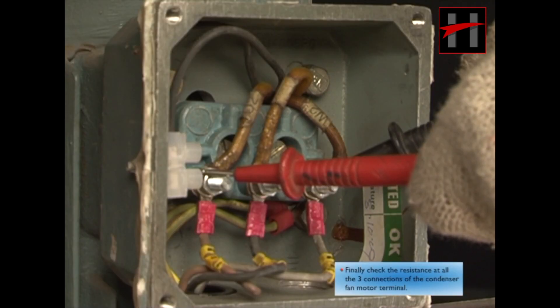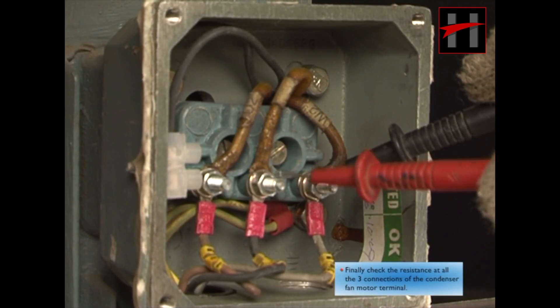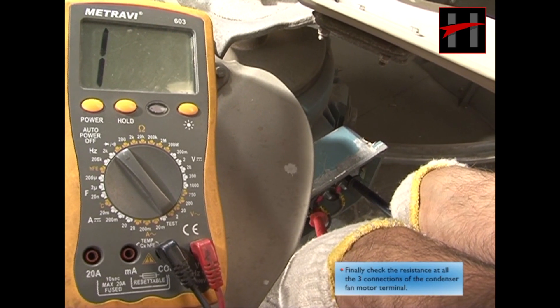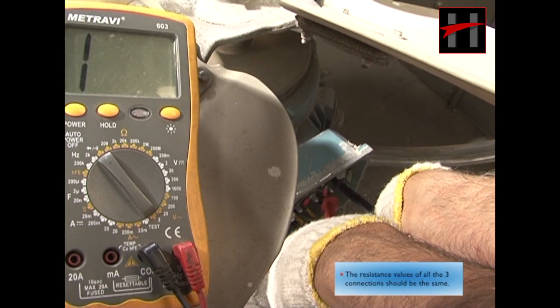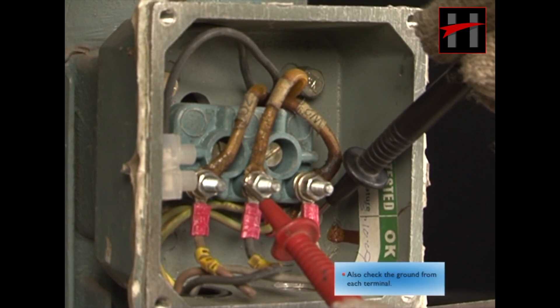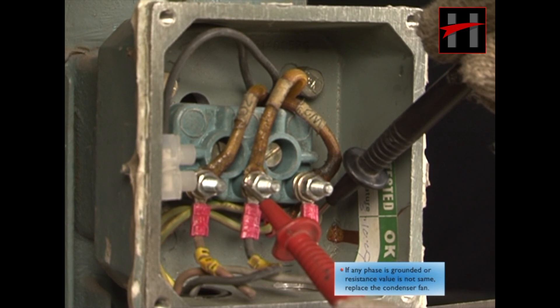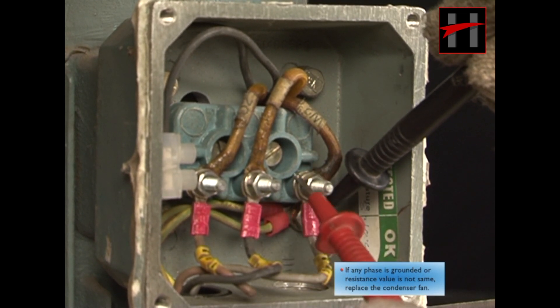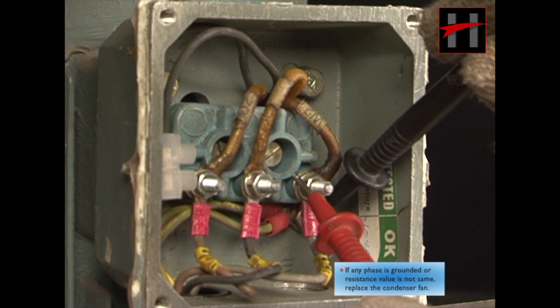Finally, check the resistance at all three connections of the condenser fan motor terminal. The resistance values of all three connections should be the same. Also, check the ground from each terminal. If any phase is grounded or resistance value is not the same, replace the condenser fan motor.